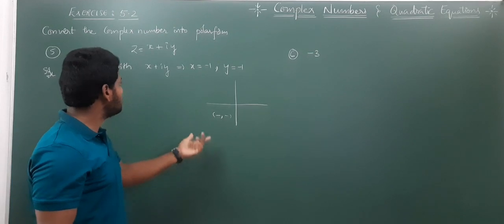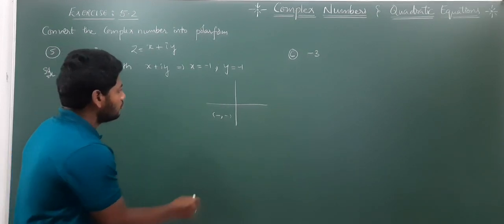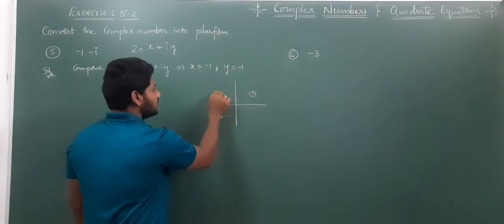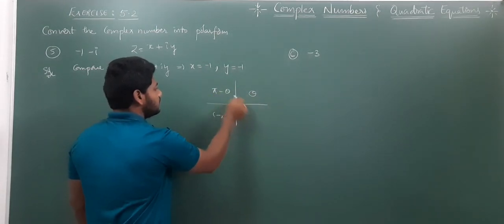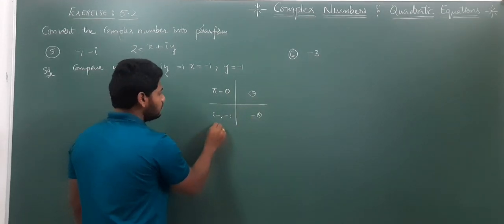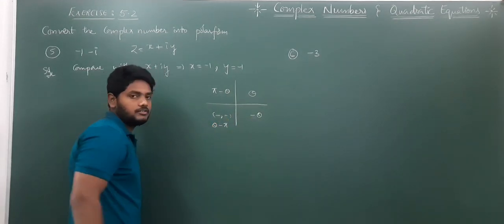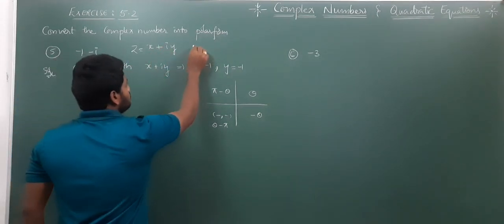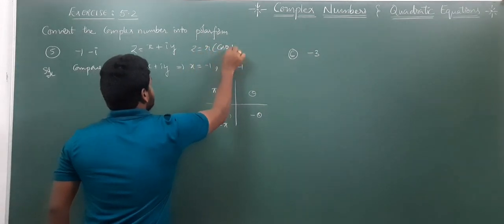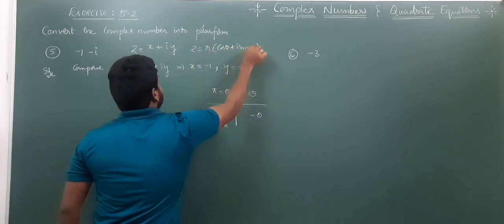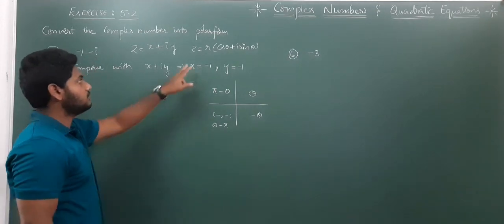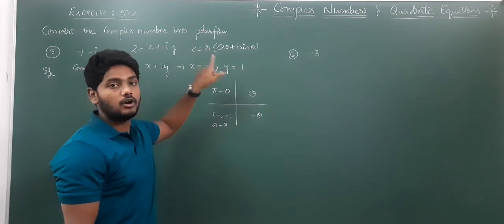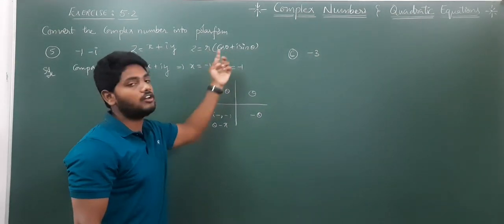In the third quadrant, we get minus and minus. For the different quadrants, the angle conventions are: first quadrant — θ; second quadrant — π minus θ; fourth quadrant — minus θ; third quadrant — θ minus π. To find the polar form Z = R(cos θ + i sin θ), we need to remember this formula, where R represents the modulus of the complex number and θ is the argument.